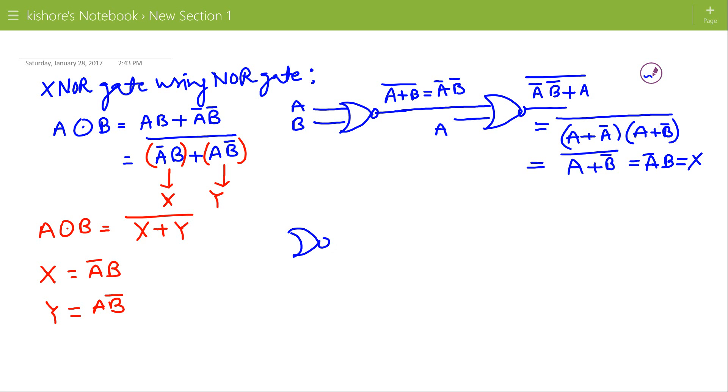First, A NOR B, A plus B bar, that is A bar B bar. This will go to another NOR gate. Second input to NOR gate is B. So A bar B bar plus B whole bar, applying distribution property, this will be A bar plus B into B plus B bar, and B plus B bar is 1.